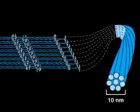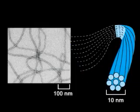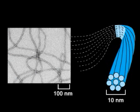An electron micrograph shows the appearance of intermediate filaments that have been assembled in a test tube.